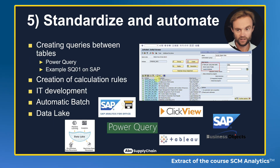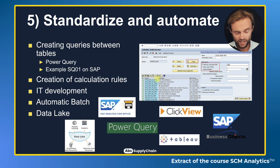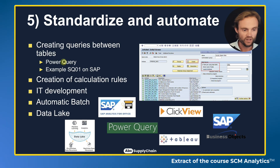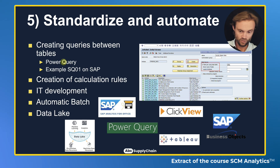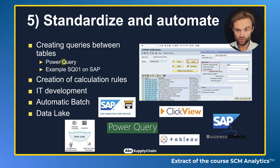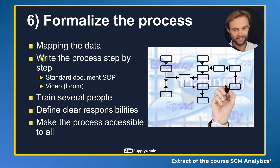Once the manual extraction is working, standardize and automate it. You can automate the extraction, or do it in Excel using Power Query — which I'll cover later — without touching the data source. You can also ask IT to create a query, for example SQ01 in SAP, which generates an automatic table with the information you need. Other options include an automatic batch, or the creation of a data lake. The key person who knows the data can help you find the best solution so you don't have to manipulate data every single day.